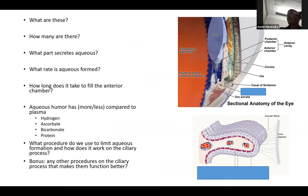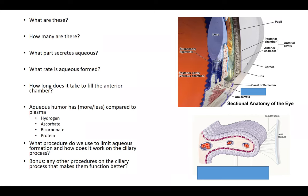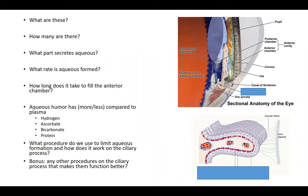Going back to the ciliary processes — what procedure do glaucoma specialists use to limit aqueous formation? Cyclophotocoagulation, either endoscopically or transclerally. It works by burning the ciliary processes, damaging the non-pigmented epithelium that produces aqueous, so it no longer produces aqueous.